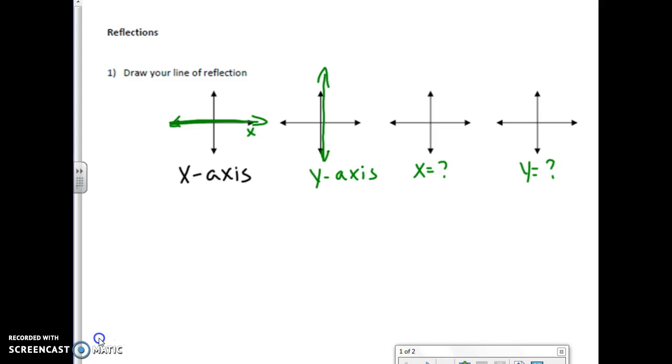And if it's x equals something, that's going to be a vertical line through that specific value. So for example, like if I wanted to say, hey, x equals 2, 1, 2. Like this is the line of reflection right there. x equals is always a vertical line.